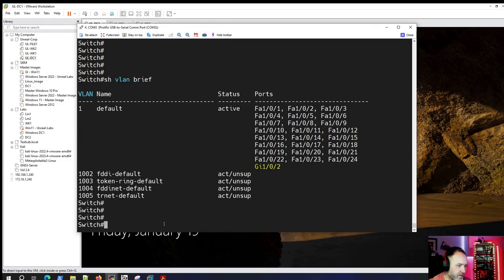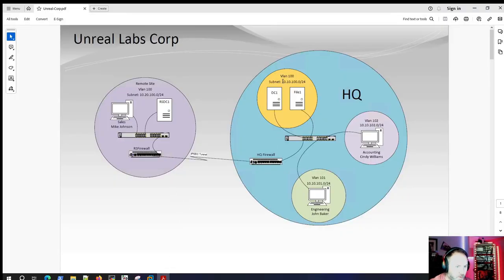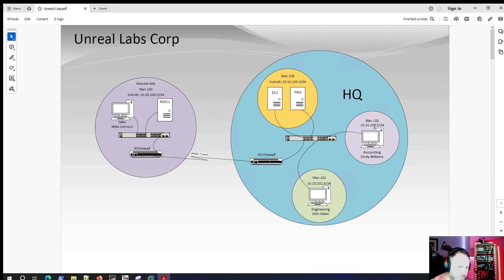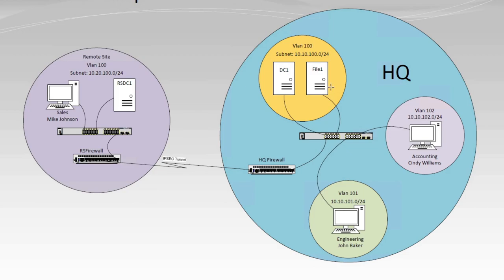Looking back at our diagram, we've got three VLANs to create: VLAN 100, 101, and 102. I've matched the VLAN number to the third octet of the subnet — so if you're looking at an IP address like 10.10.100.x, you know that's VLAN 100, that's VLAN 101. It makes it easier to understand what network you're on. Your naming convention can be totally different; that's just what I choose to use.